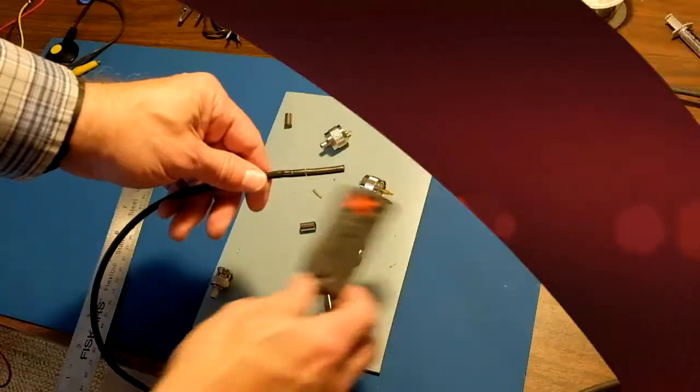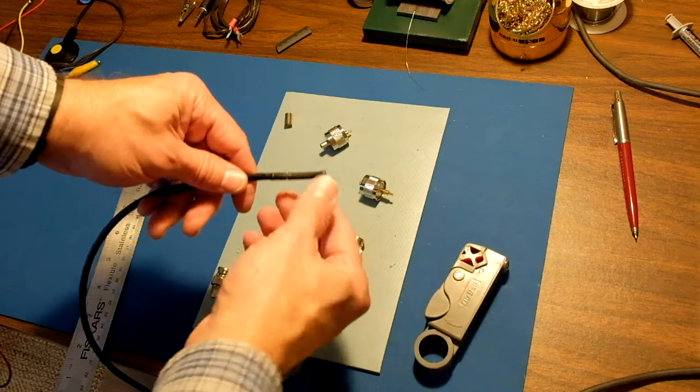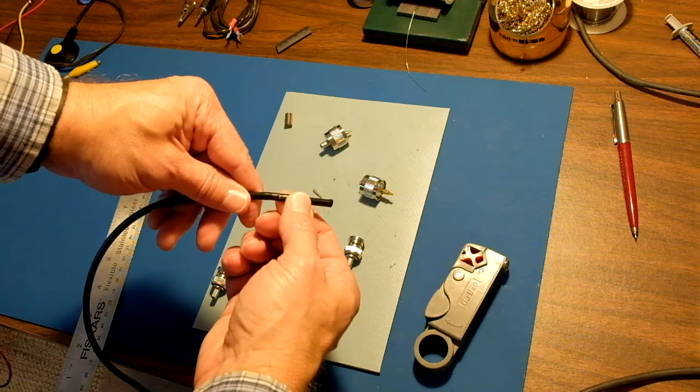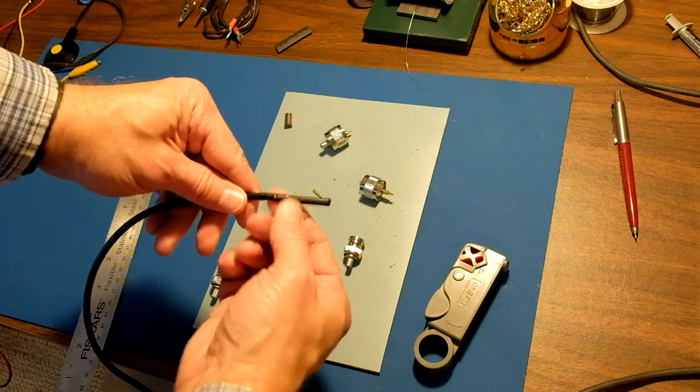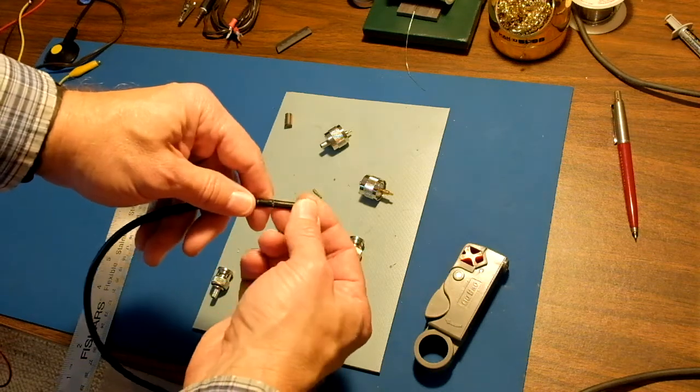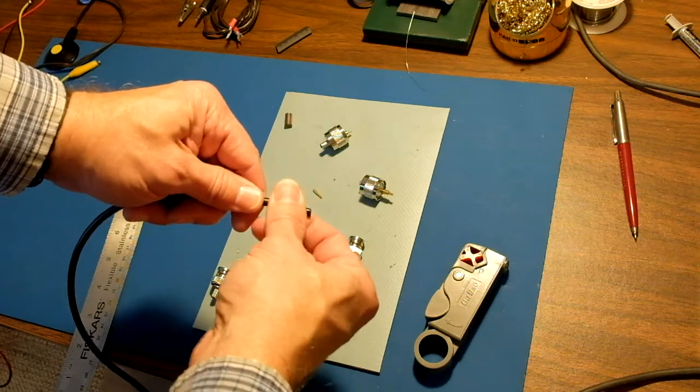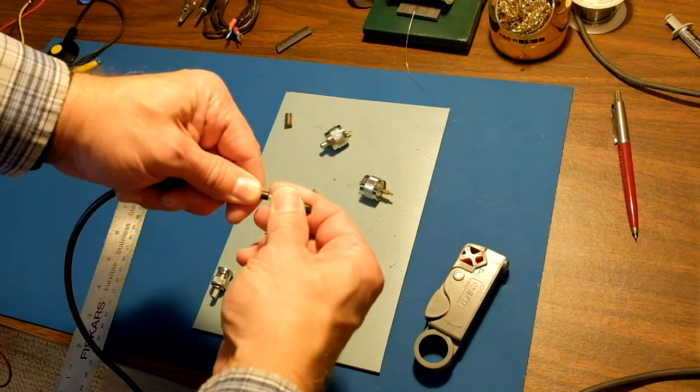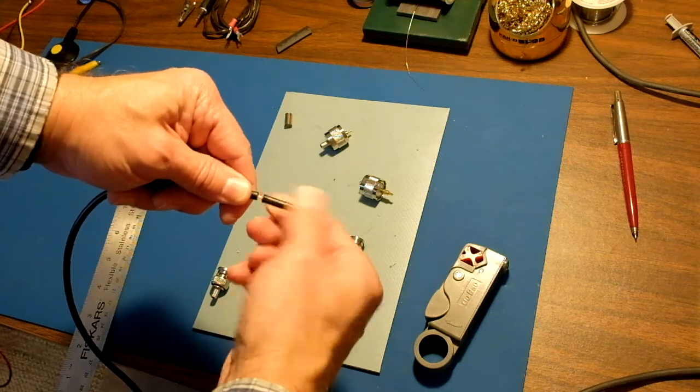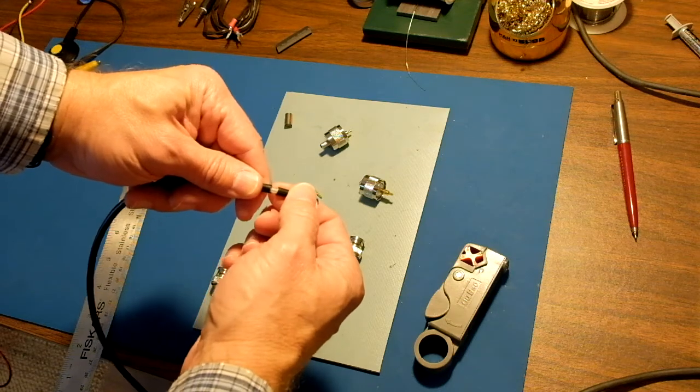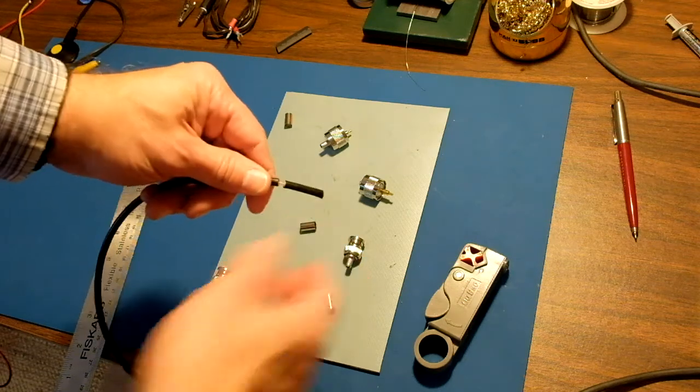As you spin that cutter around this wire, it's going to end up creating two cuts. One that cuts the outer sheath just down to the braid—you can see the braid. And then the end is going to have cut all the way through the center insulator. It has. I just have to pull it off.